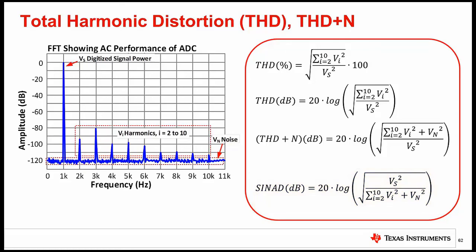In decibels, taking the reciprocal will just change the sign of the number. Note that SINAD or THD plus N will always be worse than either the THD or SNR, because SINAD is really a combination of the two error sources.